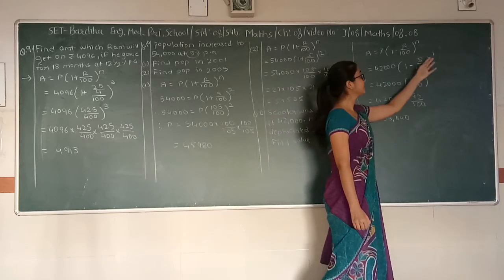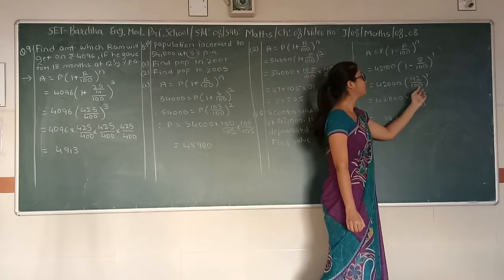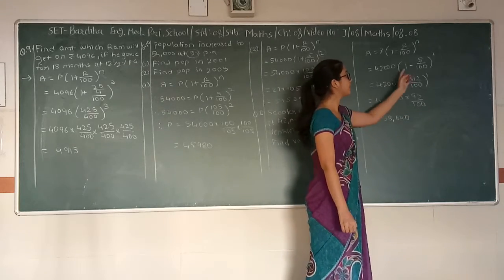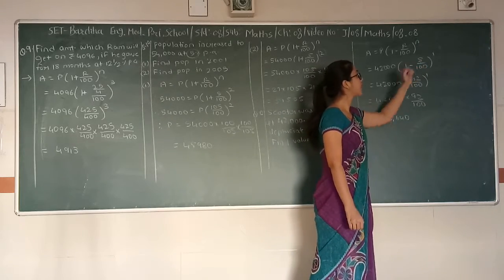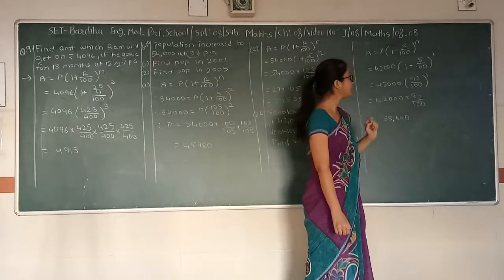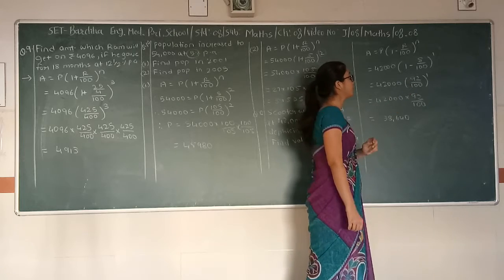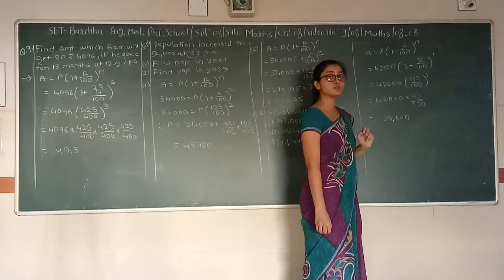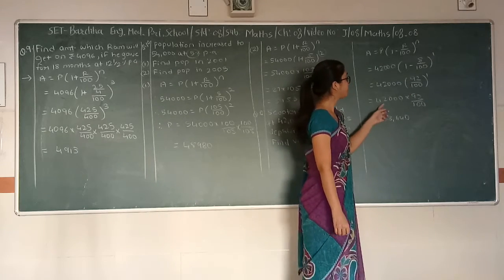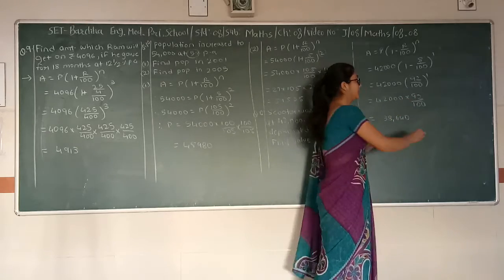So it equals 42,000 into bracket 1 minus 8 upon 100 raise to 1. On solving, we get 92 upon 100, because 100 minus 8 gives 92. So we have 42,000 into 92 upon 100 raise to 1, which gives us 42,000 multiplied by 92 upon 100.